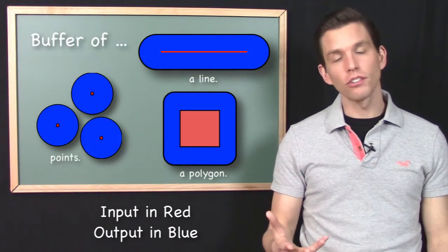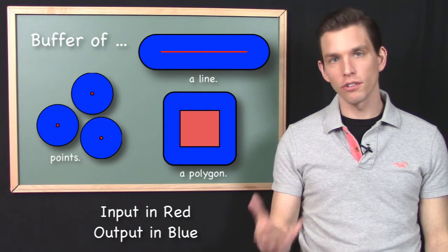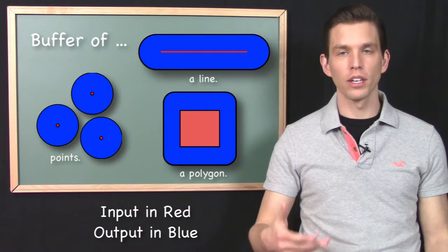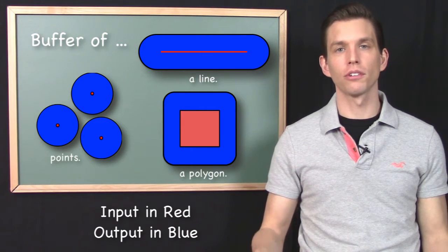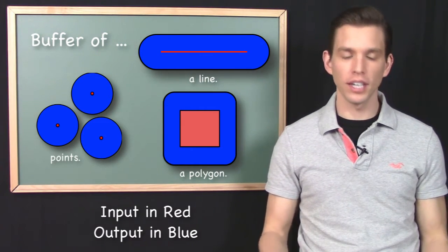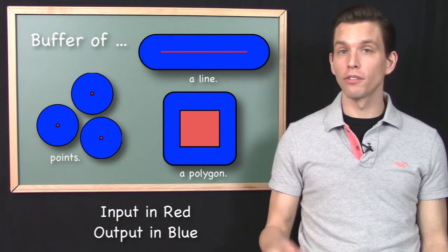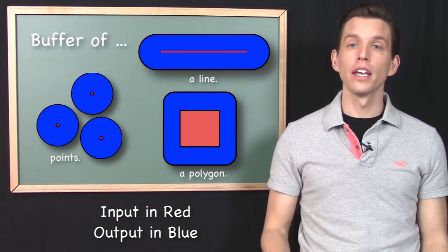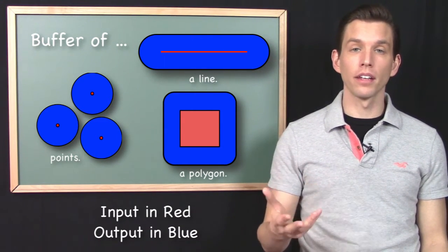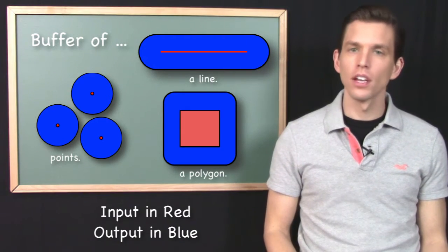So that seems very straightforward. Here's the input — we need a distance around that particular feature — and we get this output. And it is straightforward. That's the buffer tool in its core functionality. That's what it does.